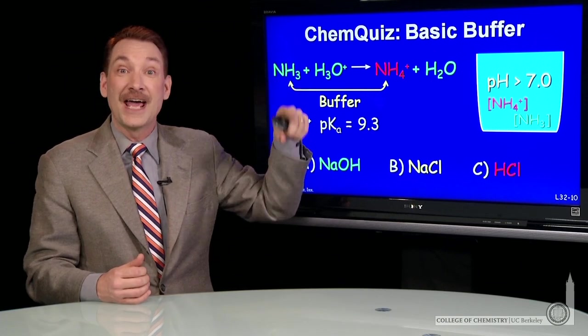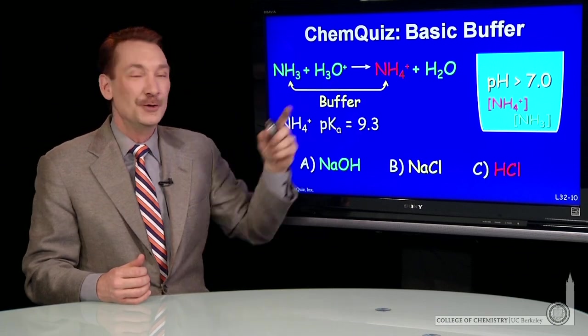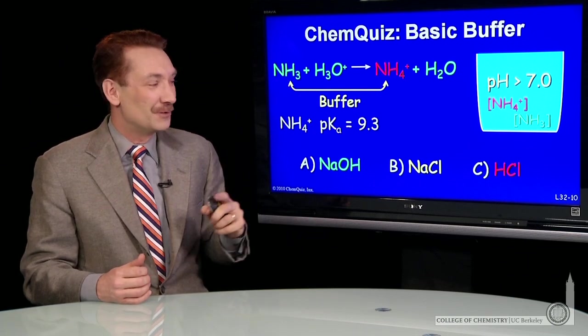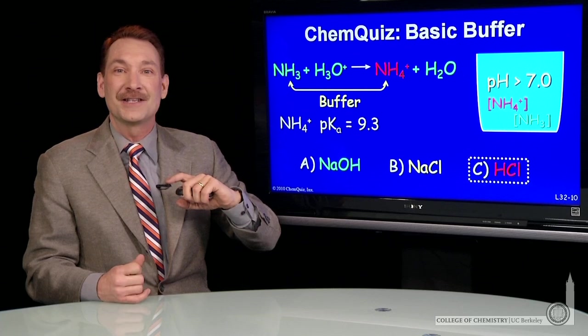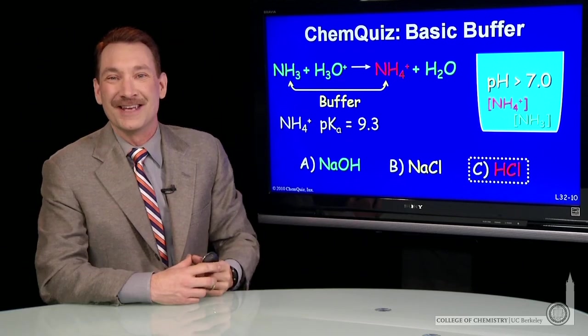And in order to form it, I actually have to add a strong acid to convert some of my base to the acid form. So in this case, the correct answer is I add some HCl to get equal concentrations of an acid and its conjugate base.